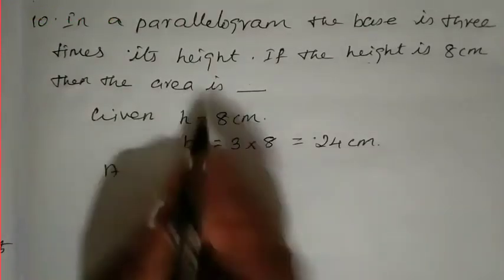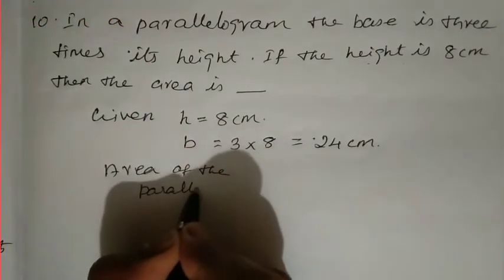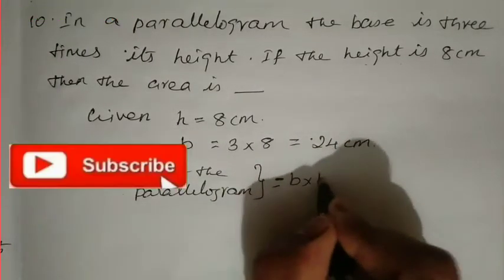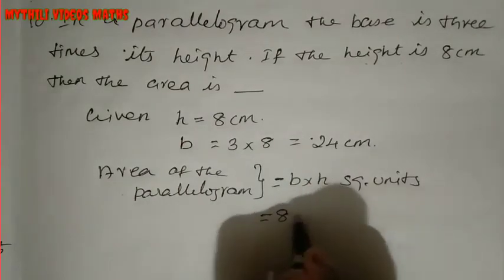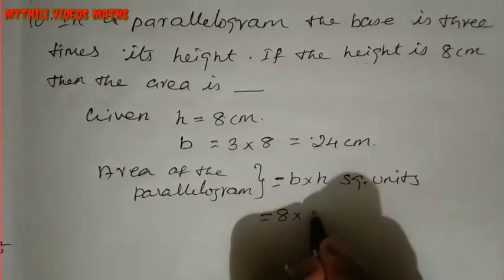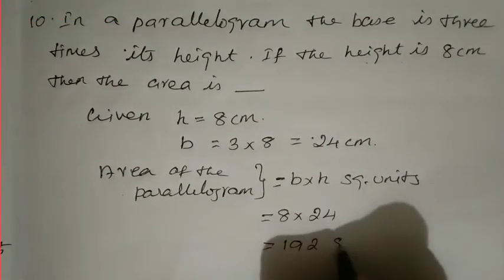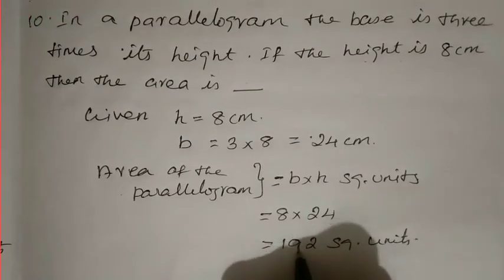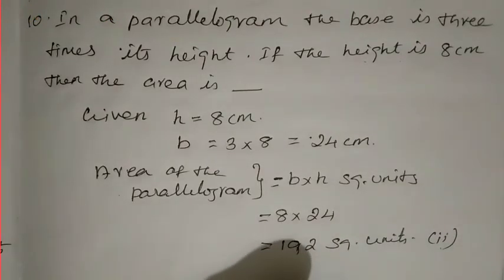Now find the area. Area of the parallelogram = b × h square units. Base = 24, height = 8. So area = 24 × 8 = 192 square centimeters. In your book, the tenth one is the second Roman numeral - that is your answer.